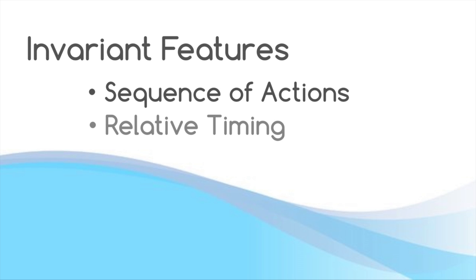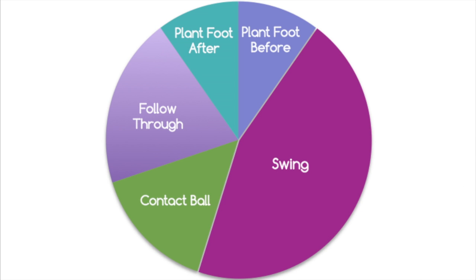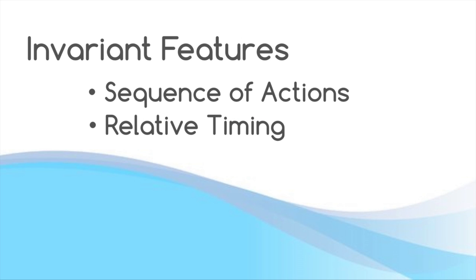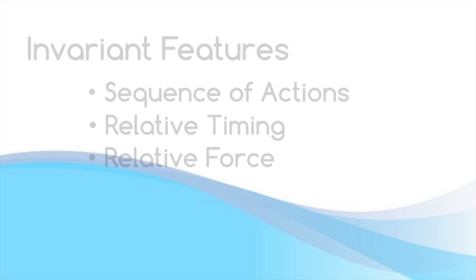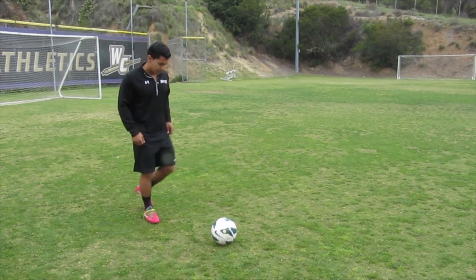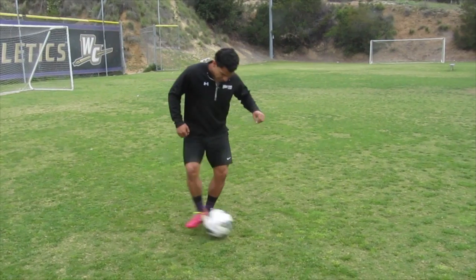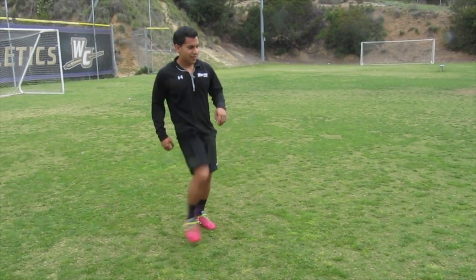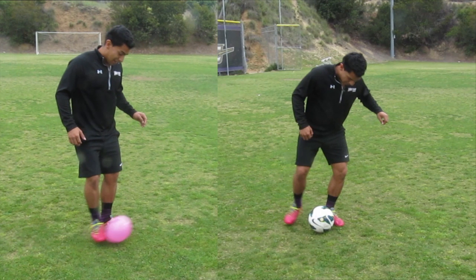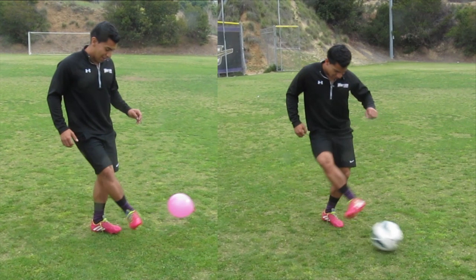The second invariant feature is the relative timing, or internal rhythm, of a skill. This chart shows a breakdown of the approximate relative timing of the elements of the skill regardless of the duration of the entire skill. The final invariant feature is the relative force, or the ratio of force to weight of an object. Here George demonstrates the difference in the relative force necessary to strike a ball versus the relative force necessary to strike a balloon.